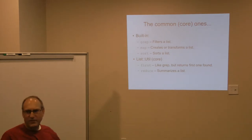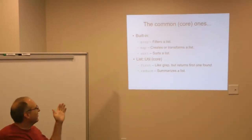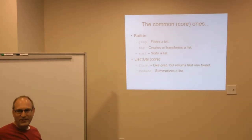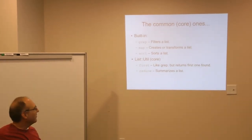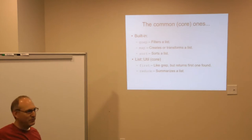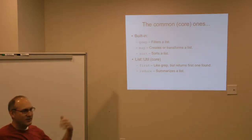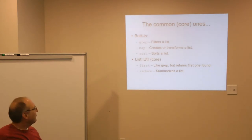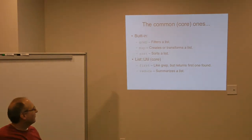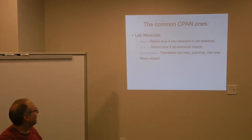Have you used any of these functions already? No. Okay. Grep is a function that filters a list. It takes its input, it passes it through, we'll look at how it works, but it passes it through a callback or through a subroutine. And based on the Boolean return value of that subroutine, it returns the elements that were passed into it into the output list. Map is used to create or transform a list, and sort, of course, sorts a list. And then in list utilities, first is like grep, but it returns the first item found instead of every item found that matches the criteria. And reduce is a way of summarizing a list.